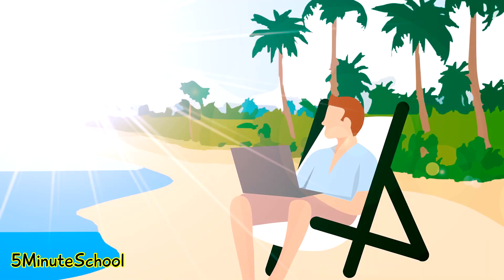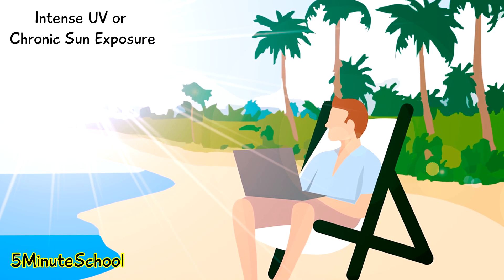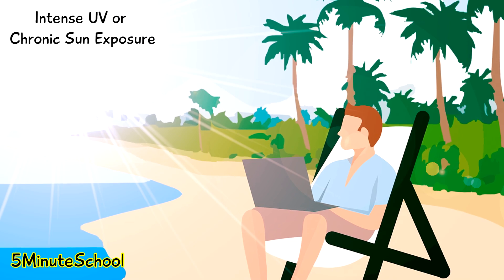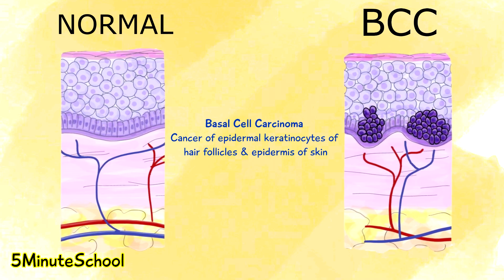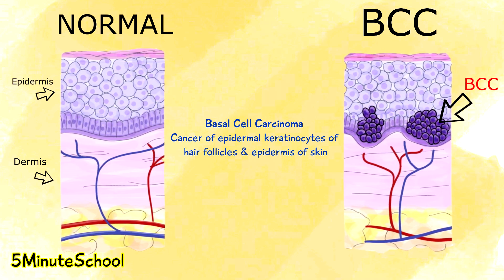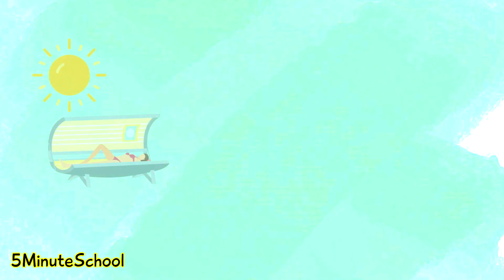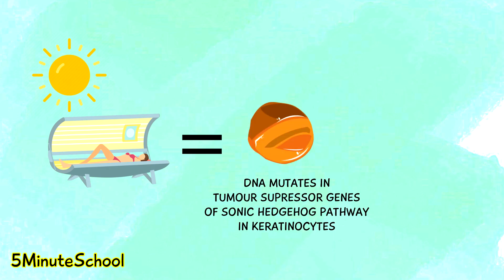In the young population, common causes of basal cell carcinomas can be intense UV or sun exposure, but they are more commonly seen in the elderly Caucasian population. Basal cell carcinomas are cancers of the epidermal keratinocytes of hair follicles and the epidermis of the skin. A common cause is intense or chronic UV light exposure, which causes DNA to mutate in tumor suppressor genes of the sonic hedgehog pathway in keratinocytes.